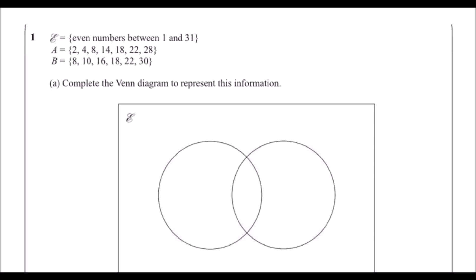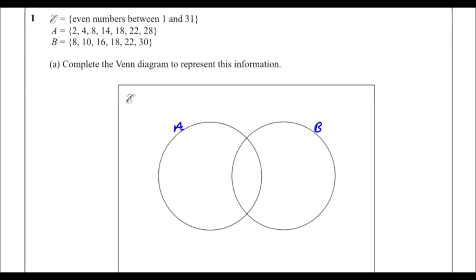Question 1. So here we've got a Venn diagram question. We've got all of the numbers between 1 and 31 that we're going to have to place on our Venn diagram. We've got two groups, two circles — one's called A and one's called B. A has got the numbers 2, 4, 8, 14, 18, 22 and 28 in it. B has got 8, 10, 16, 18, 22 and 30 in it. So we're going to complete the Venn diagram.